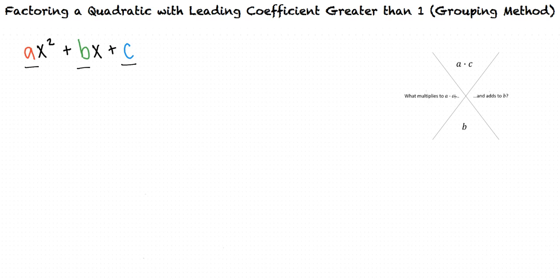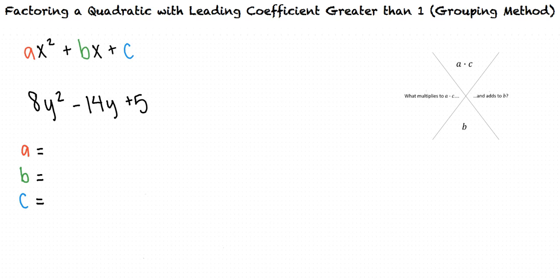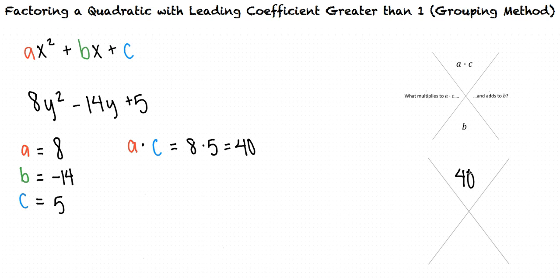Let's take a look at the following problem: 8y squared minus 14y plus 5. Looking at this problem, we can identify that a equals 8, b equals negative 14, and c equals 5. If we multiply a times c, we're multiplying 8 times 5, obtaining a product of 40. We can put this number in the top part of our chart. We have identified b as negative 14, so we can put this in the bottom part of our chart.